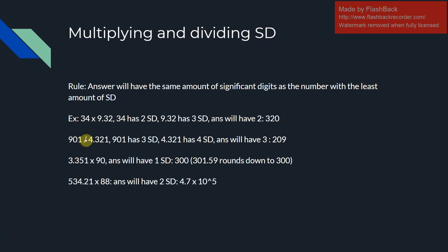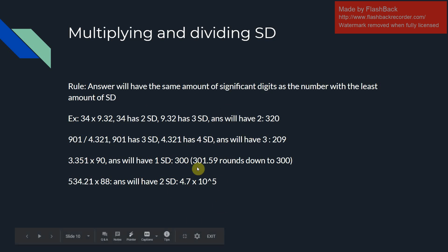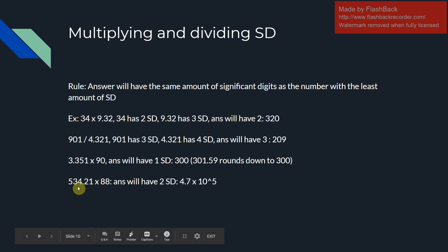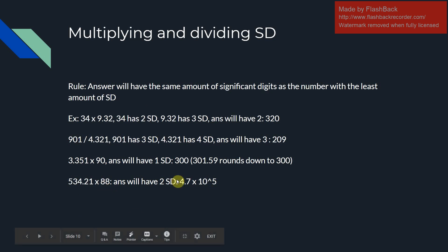If you take 901 divided by 4.321 — 901 has three significant digits while 4.321 has four, so the answer has three: 209. For 3.351 times 90 — one significant digit versus four, so the answer only has one: 300, since the regular answer is 301.59 which rounds to 300. For 534.21 times 88 — two significant digits versus five, so the answer has two: 4.7 times 10 to the 5.